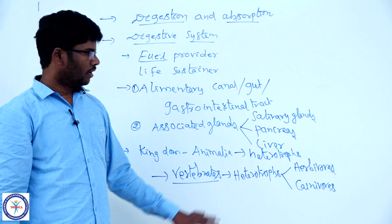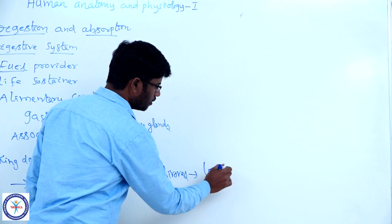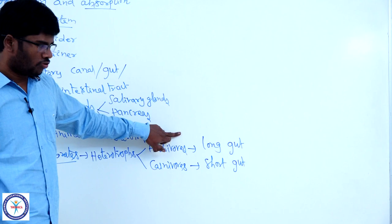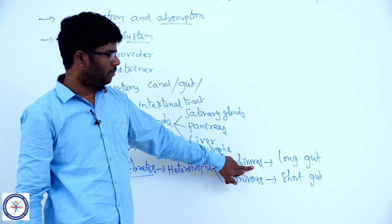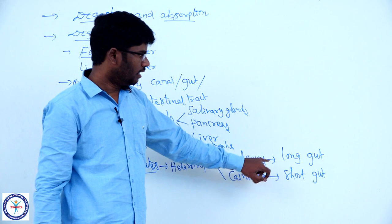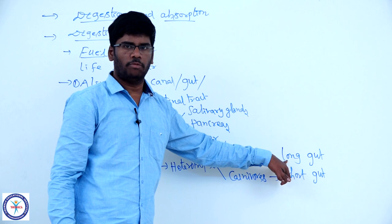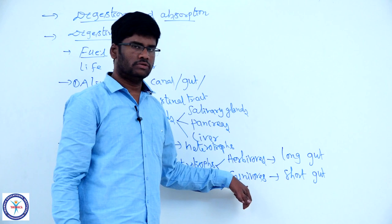One difference between herbivores and carnivores is the gut length. In herbivores, a long gut is present, but in carnivores a short gut is present. The reason is herbivores are plant-eaters, so the bulk of their food is made up of cellulose. They cannot digest cellulose, so they need a long elementary canal to absorb the small amount of food they can digest. They need a long surface area.